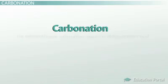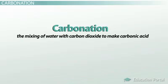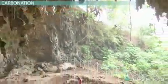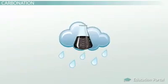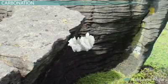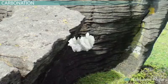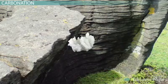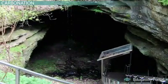Carbonation is another type of chemical weathering. Carbonation is the mixing of water with carbon dioxide to make carbonic acid. This type of weathering is important in the formation of caves. Dissolved carbon dioxide in rainwater, or in moist air, forms carbonic acid, and this acid reacts with minerals in rocks. The mineral calcite, which is common in limestone, is particularly vulnerable to carbonation. This mineral dissolves in the carbonic acid and gets washed away, which can hollow out the rock and leave behind a cave.